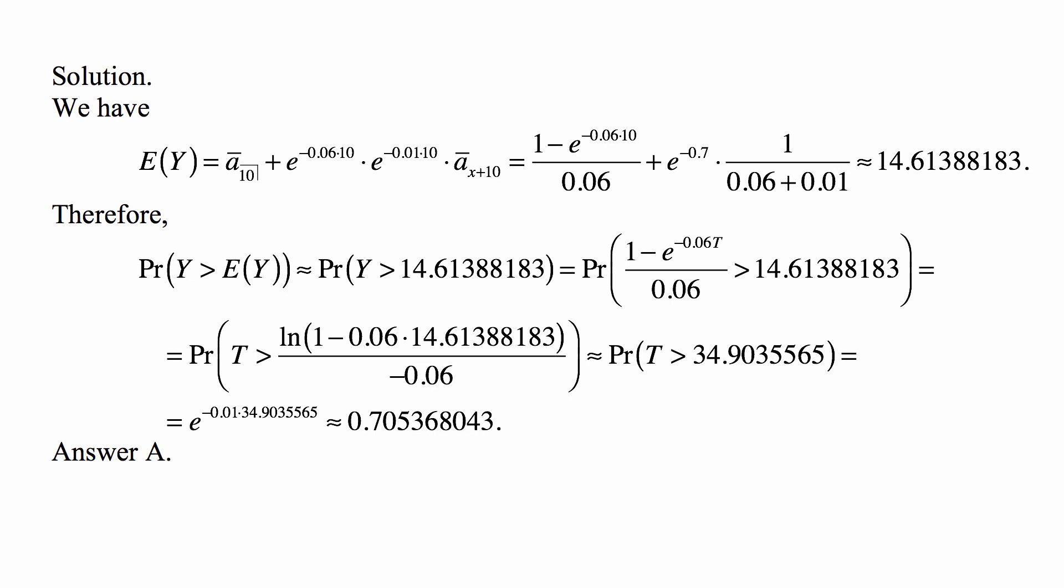With the t value being 34.9035565, so this is e^(-0.01 × 34.9035565), and that's approximately 0.705368043, which is answer A.